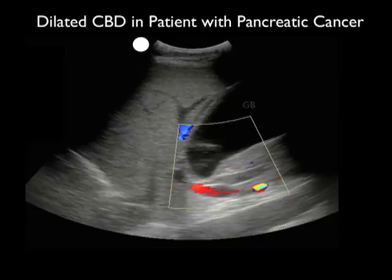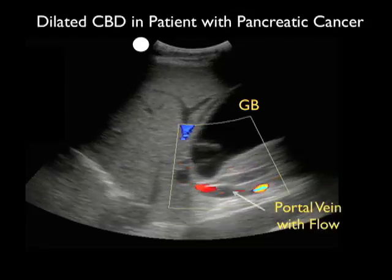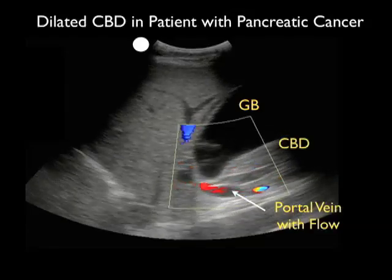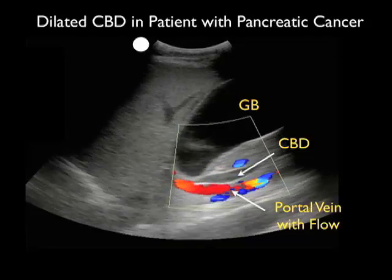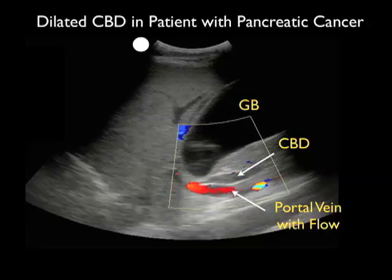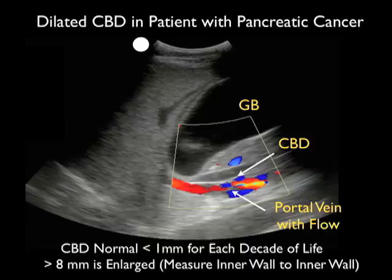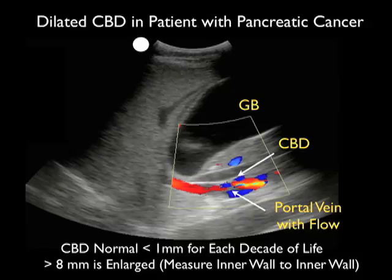In this video clip, we can appreciate the common bile duct and portal vein in more of a long axis configuration. We've turned the probe so now the probe marker is over towards the patient's right shoulder, and we see the gallbladder towards the top of the image. We see two parallel channels towards the bottom — the portal vein with Doppler flow and on top of it, the common bile duct. As the common bile duct enlarges with obstruction, it will become as large or larger than the accompanying portal vein. Normal dimensions for the common bile duct should be no larger than one millimeter for each decade of the patient's life, and a common bile duct measuring greater than eight millimeters in diameter is universally enlarged. When measuring the common bile duct, we measure from inner wall to inner wall across the lumen.